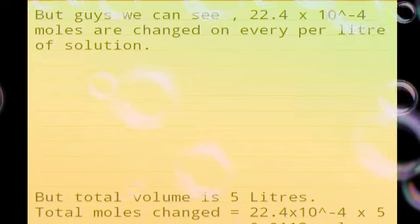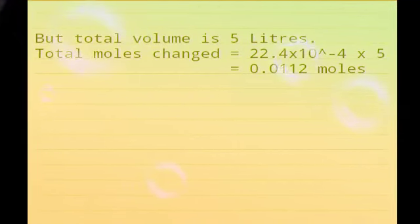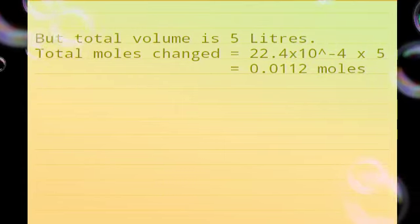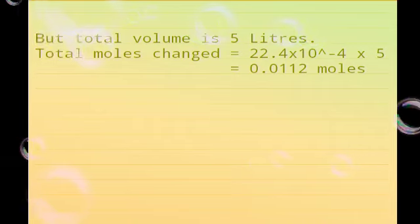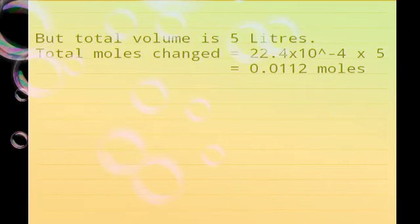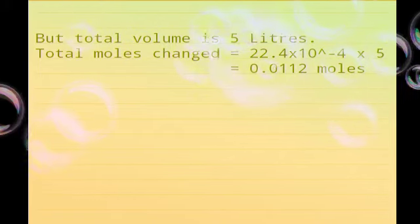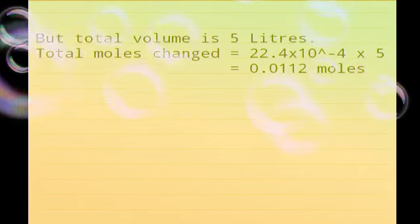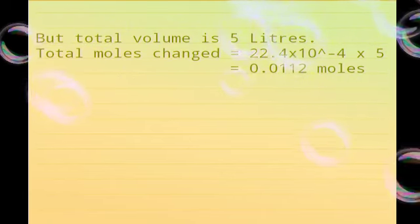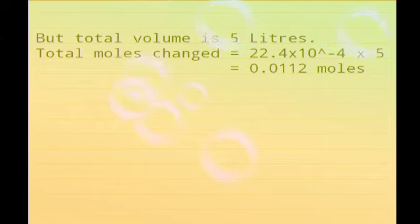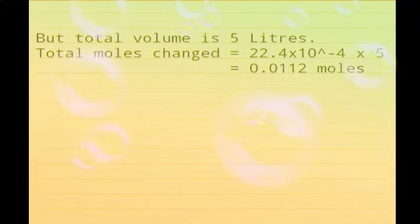This is the difference, which is moles per liter. We have a total volume of 5 liters. So with 5 liters, we multiply into volume which will give you the number of moles altogether changed when you came from down to top. So it is 0.0112 moles changed.